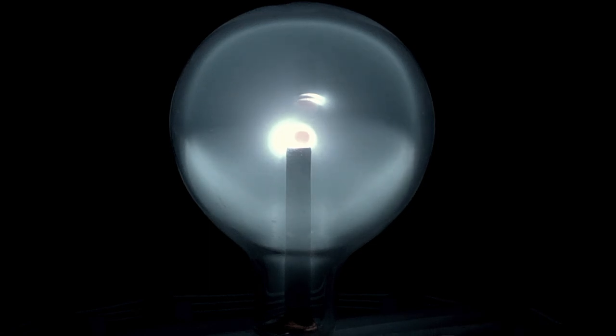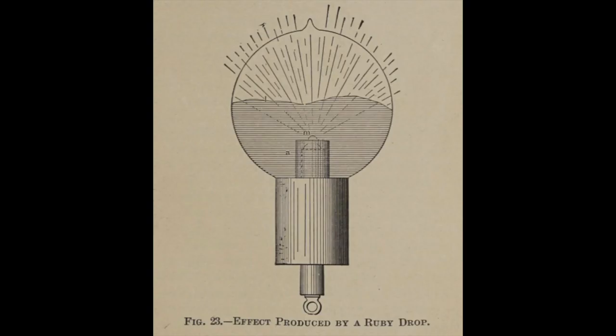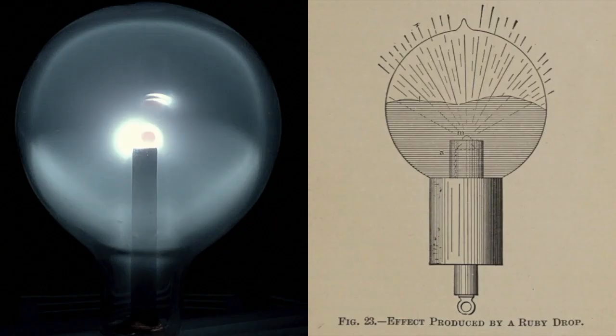Although intriguing, Tesla had once remarked upon this effect, stating its existence as an irregular patch. This effect was observed in a similar bulb, shown as figure 23, with the patch represented by the shaded lines. Instead of a button of carbon, a ruby drop was employed. Despite this, the same effect has been achieved as shown.